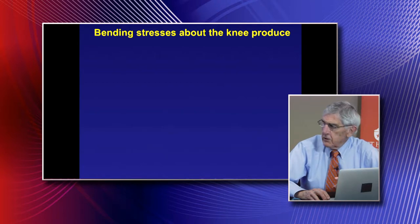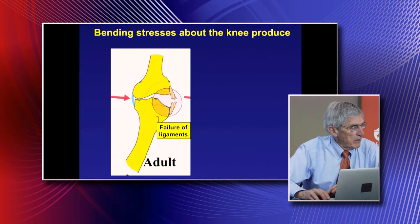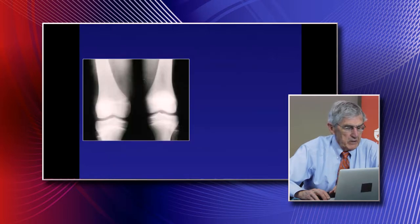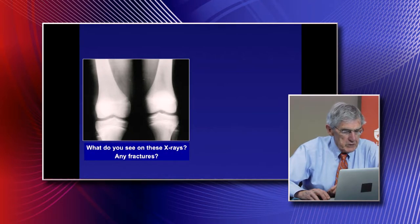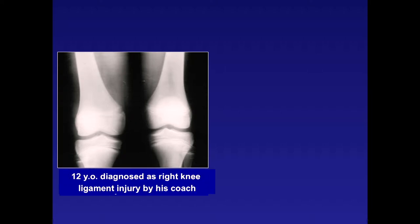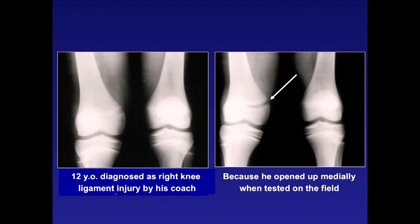Here's a good example with bending stress about the knee. In an adult with severe valgus stress, you get failure of the collateral ligaments. In a child, you get a physis injury—because the ligaments are stronger than the physis and adjacent bone. Here's a football player who got hit from the side with a valgus force. The coach thought he had bad knee ligament injuries because the knee opened up, but the failure actually occurred through the physis. The ligaments are stronger.